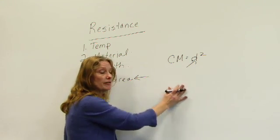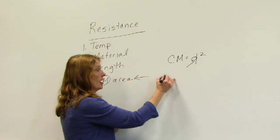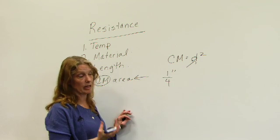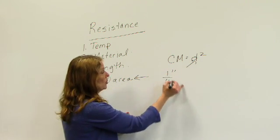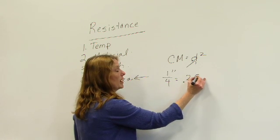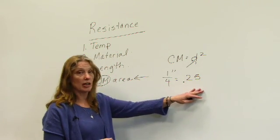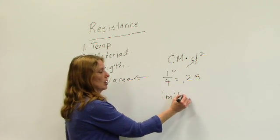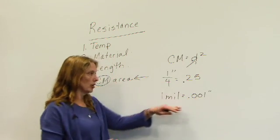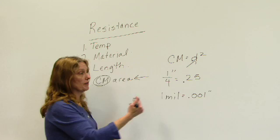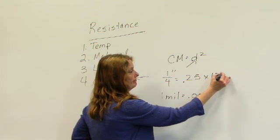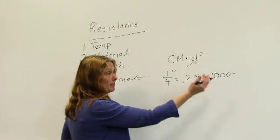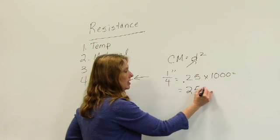So what we would do is if I have a quarter inch diameter conductor, I would first need to change this quarter inch, which is real common here in the U.S., and change it to a decimal. So I take one divided by four, come up with 0.25. The next thing is I want to convert it to mills. To convert from inches to mills, I multiply it by 1,000. Taking 0.25 times 1,000, I come up with 250 mills.